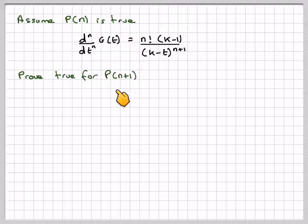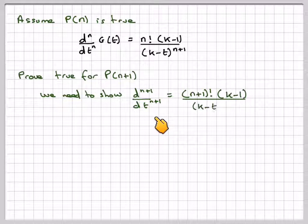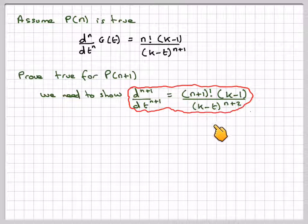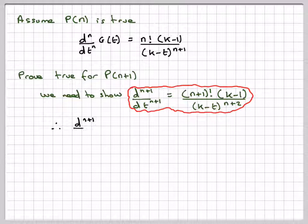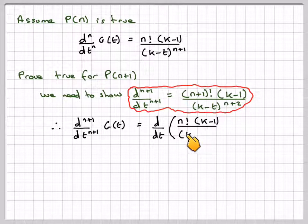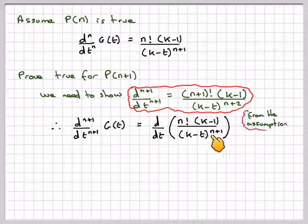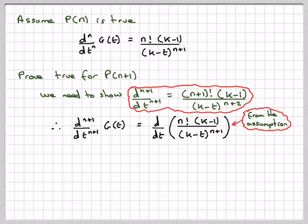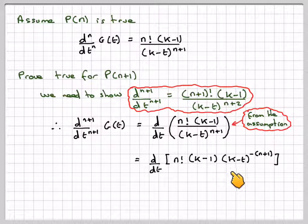We need to prove P(n+1) is true, i.e., that the (n+1)-th derivative equals (n+1) factorial times (k-1) over (k-t) to the n plus 2. The (n+1)-th derivative of g(t) is obtained by differentiating our inductive assumption: n factorial times (k-1) over (k-t) to the n plus 1.